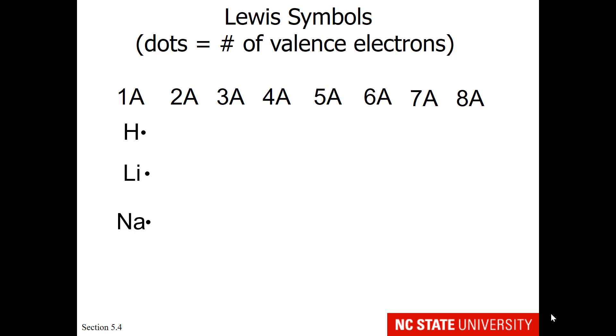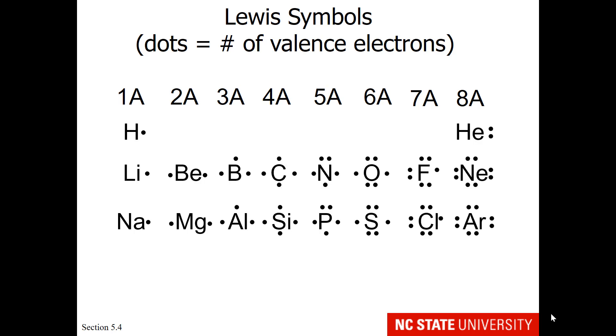Atoms in Group 1A will have one valence electron. Atoms in Group 2A will have two valence electrons, and I'm sure you can recognize the pattern. Atoms in Group 5A will have five valence electrons.